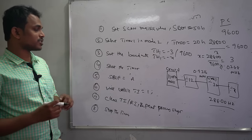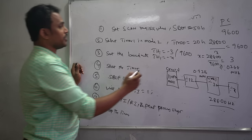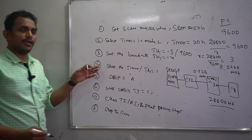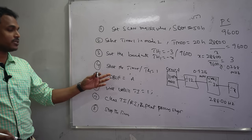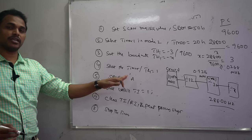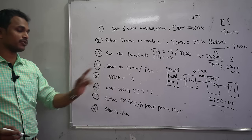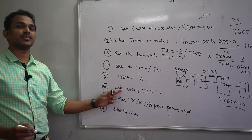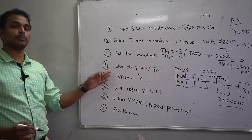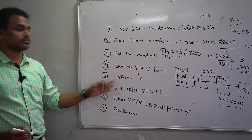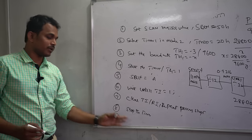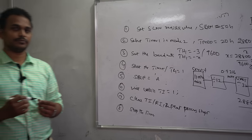Start the timer by setting TR1 = 1. Load the data to transmit into the SBUF register. Wait until TI is set to 1, then clear TI or RI for the next repetition. If more characters need to be sent, reassign SBUF and repeat continuously. Finally, when all communication is complete, stop the timer.